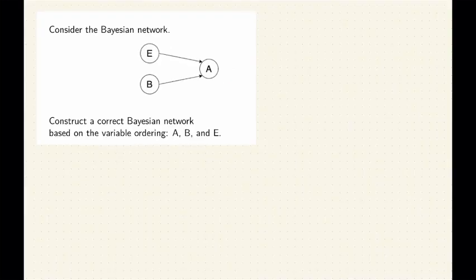Let's follow the steps of constructing a Bayesian network. For each step, based on the ordering, we will add the node to the network, then we'll decide on the parent set for the node.